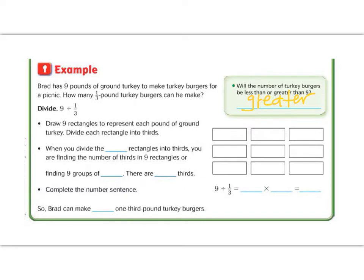Now let's go ahead and draw this example. It says, draw nine rectangles to represent each pound of ground turkey. So they gave us the nine rectangles. Now we're going to divide each of the nine rectangles into thirds, because we're dividing by one-third. So we're going to split each rectangle into three pieces. Now, if we have nine groups of three, then that must mean nine times three gives us 27 thirds. If we count, 1, 2, 3, 4, 5, 6, 7, 8, 9, 10, 11, 12, 13, 14, 15, 16, 17, 18, 19, 20, 21, 22, 23, 24, 25, 26, 27, it confirms our multiplication.